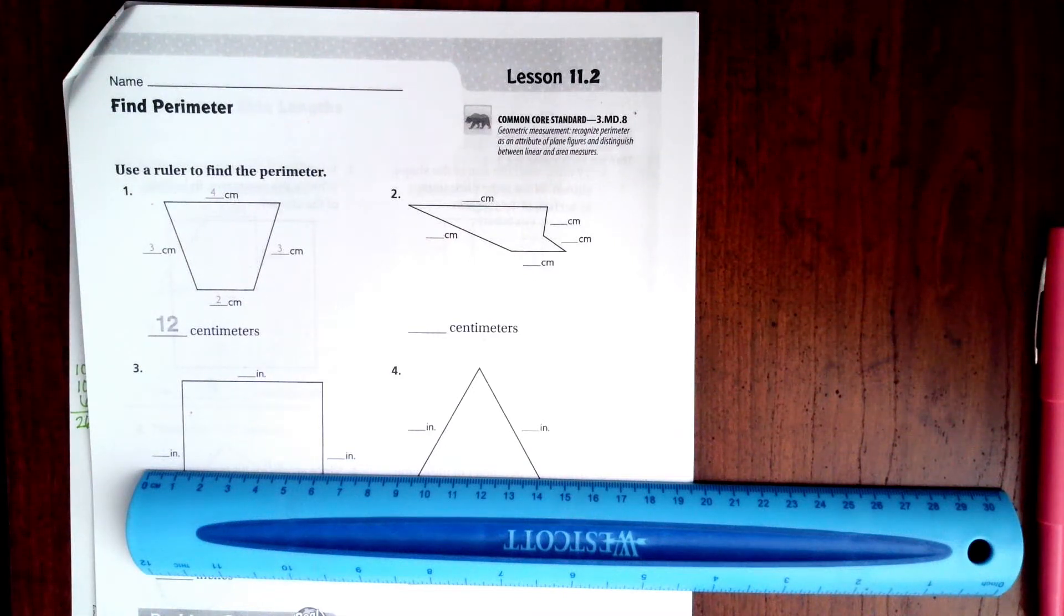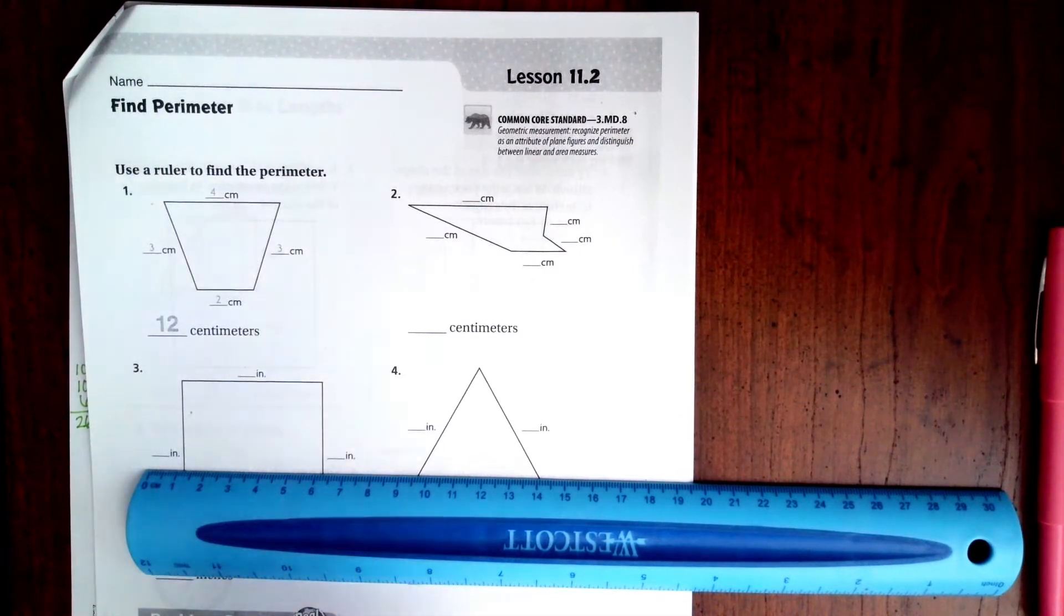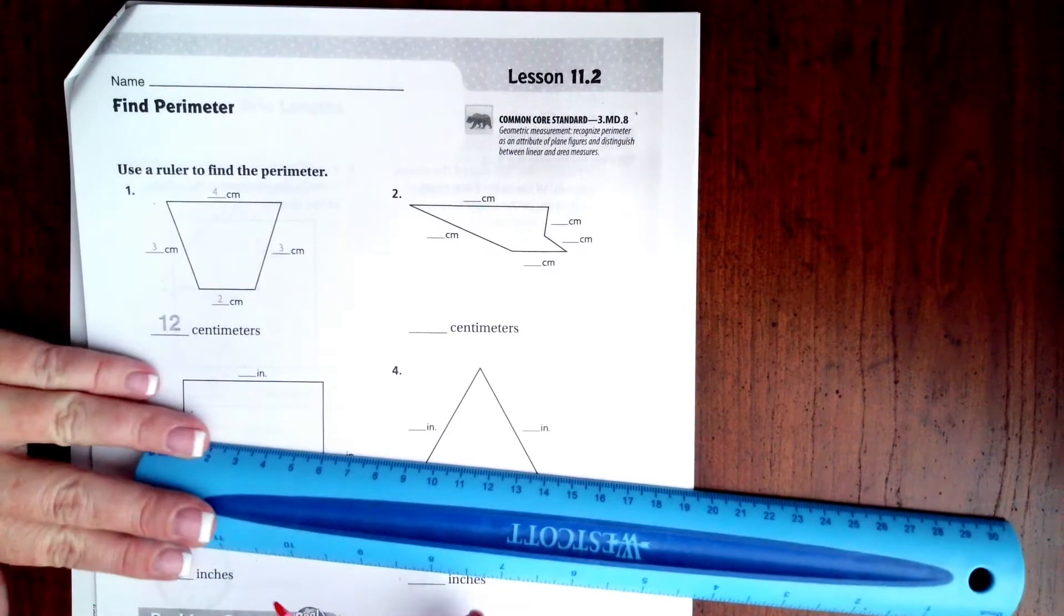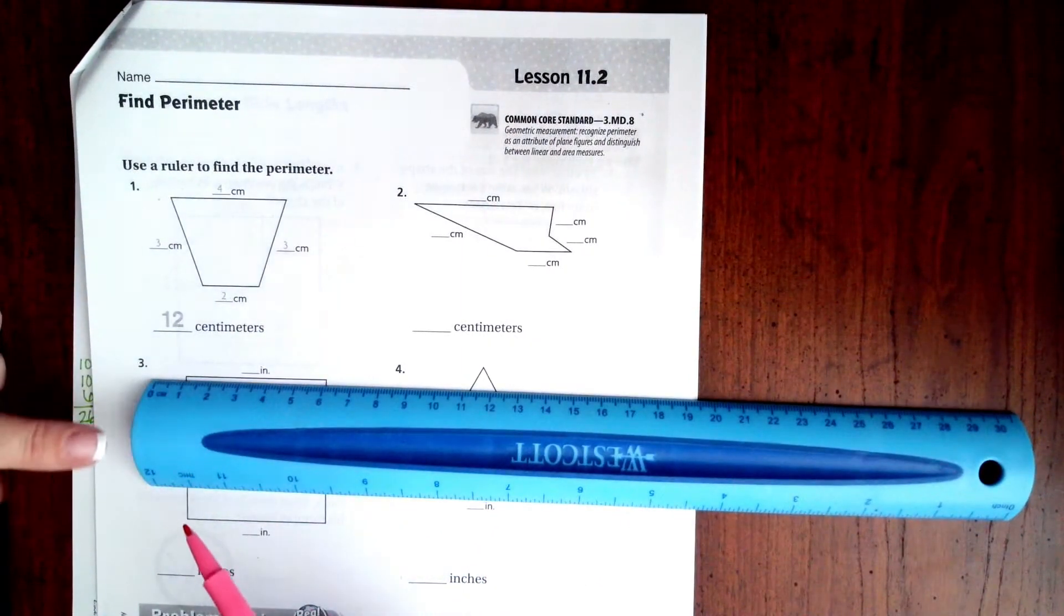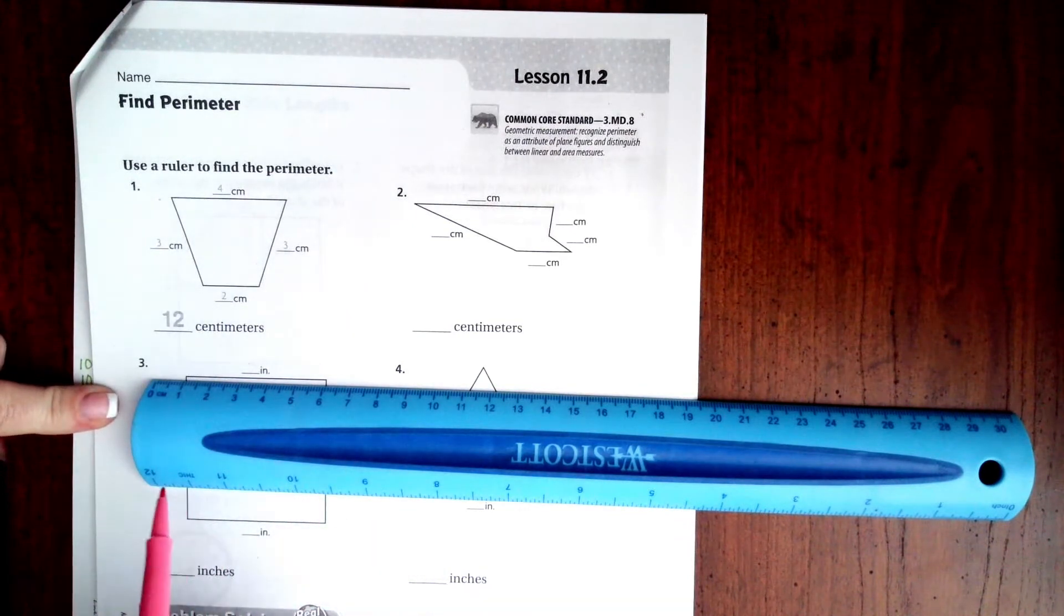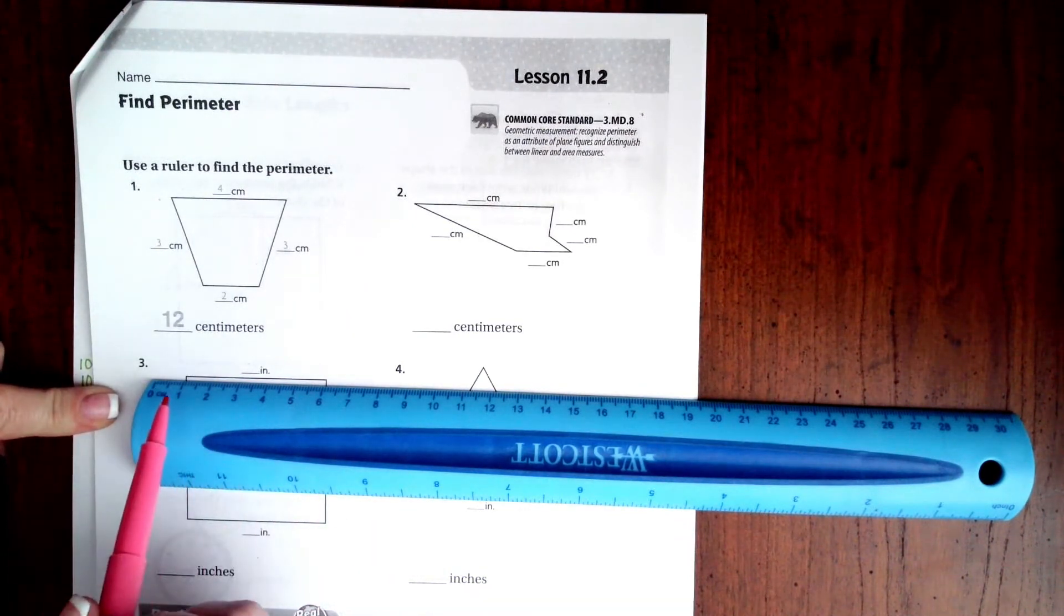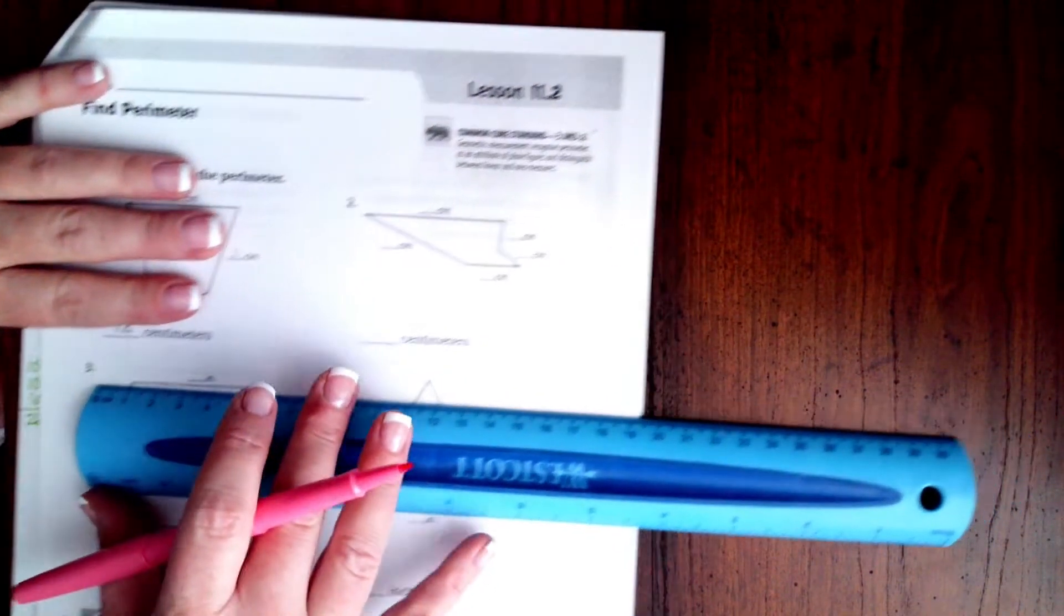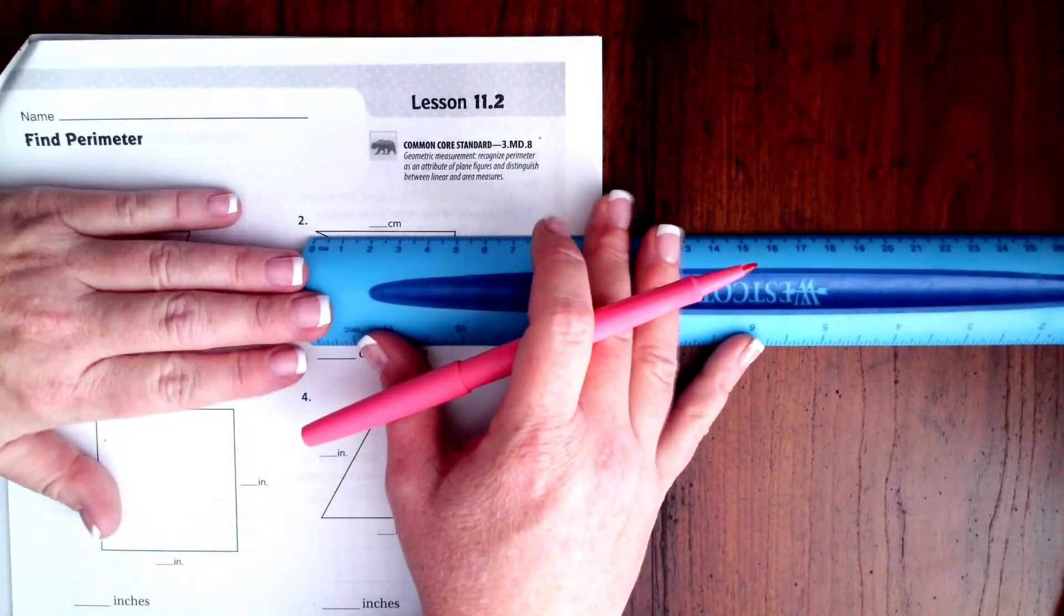Hi guys, welcome to third grade Chapter 11, Lesson 2. We're going to get started with number 2. You will see that they are using the centimeters, not the inches, the centimeter marks on a ruler. Centimeters are much smaller than inches.